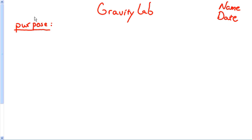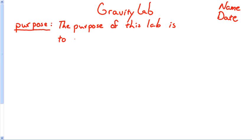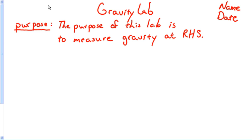I always do reports the exact same way. The purpose — a complete sentence: 'The purpose of this lab is to measure gravity at Ramboran High School' — I'll shorten that to RHS. I once had somebody write 'the purpose of this lab is to find gravity at Ramboran.' Well, that'd be an easy lab — you've dropped something four times and confirmed there is gravity. Our purpose was to measure gravity. You can copy what I've got here for your report.